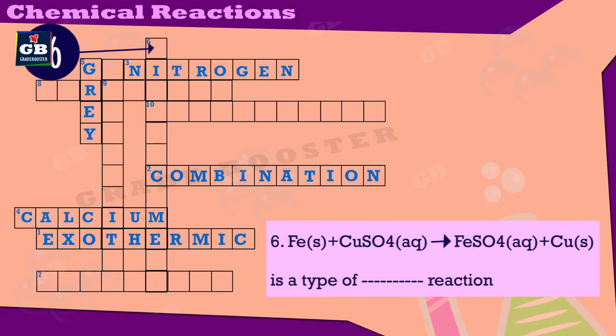Fe + CuSO4 gives rise to FeSO4 + Cu. This is a type of what reaction? Yeh kis prakar ka reaction hai? Answer: displacement.